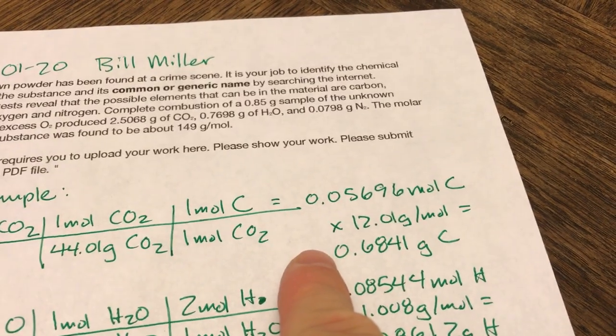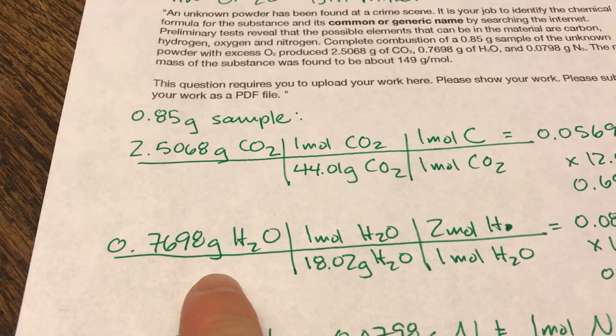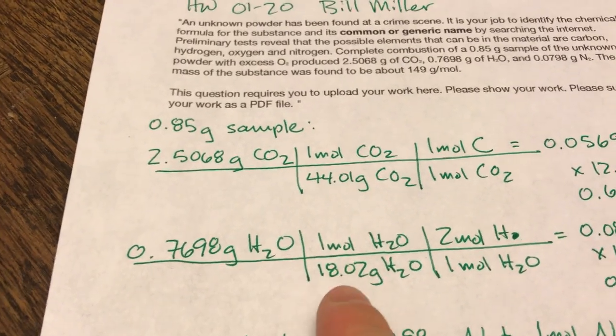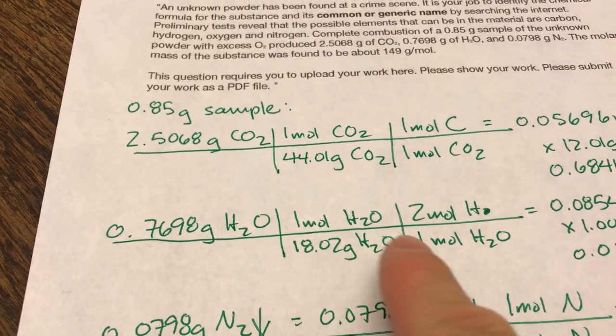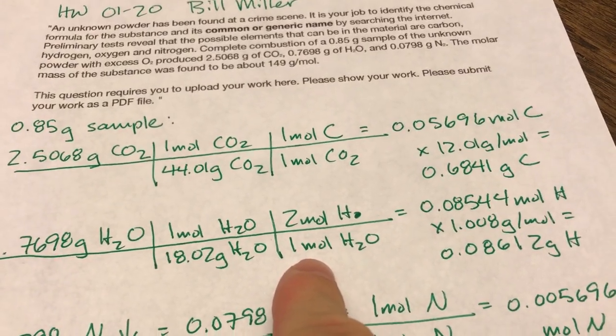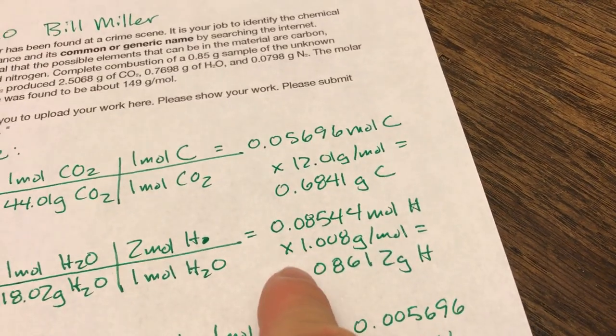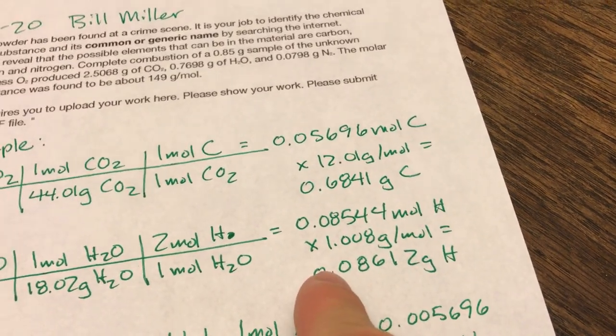I'll need both of those later in the problem. I did a similar thing for H2O. I took the grams, converted them into moles of H2O. And then there are two moles of H for every one mole of H2O. That got me my moles of hydrogen, and I got my grams of hydrogen using the molar mass there.